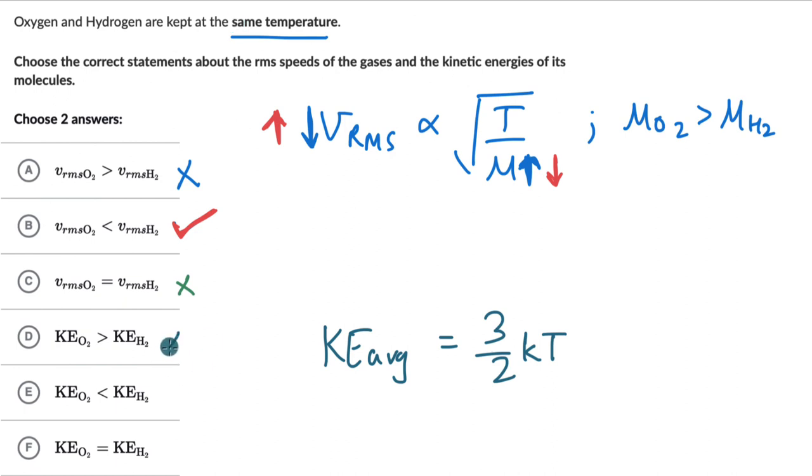So both D and E are wrong. In fact, the right answer is option F because it only depends on temperature and they are kept at the same temperature. So the kinetic energy for oxygen and hydrogen must be the same.